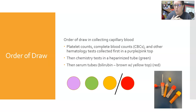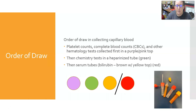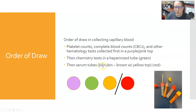The order of draw for capillary collections is completely different — almost the reverse — from venipuncture. First, collect platelet counts, CBCs, or other hematology tests in a purple or pink top tube. Follow with chemistry tests in a heparinized green tube. Then collect serum tubes — for bilirubin, usually a light-protected brown tube with a yellow top, or a plain red top.